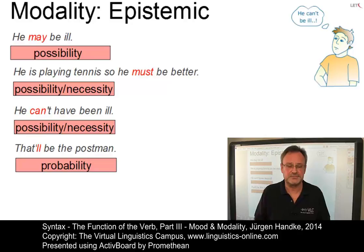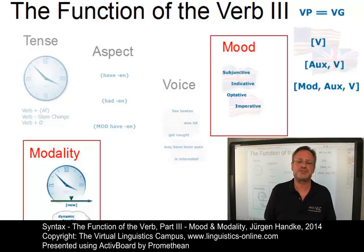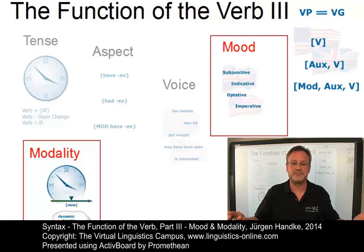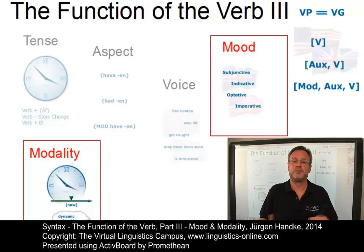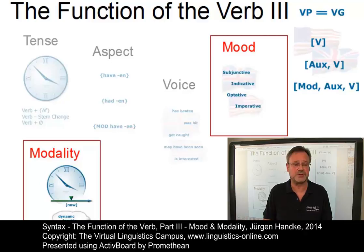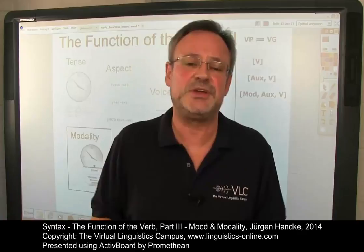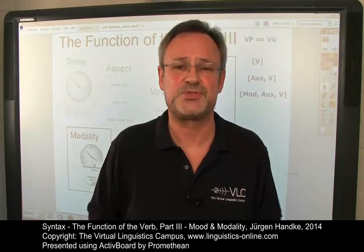So much for modality. Let's summarize. In this e-lecture, we discussed two additional functions of the verb: mood and modality. Mood is realized by a particular verb form. Modality is realized syntactically in present-day English — by means of a complex verb group with a particular modal verb in it. However, we have seen that alternative options such as the use of adverbs, adjectives, nouns and verbs are also possible. This is the final e-lecture in the series dealing with the central functional aspects of the verb. Thank you very much for your attention.